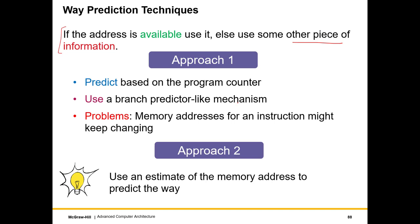To design an accurate way predictor, if the memory address is available, we use it — it will be the best predictor in almost all cases. However, there are pipelines where the memory address may not be available when we initiate way prediction, so we need to proceed on the basis of other information. One approach is to predict based on the program counter, using a mechanism very similar to branch predictors.